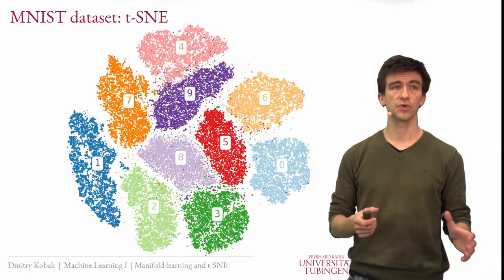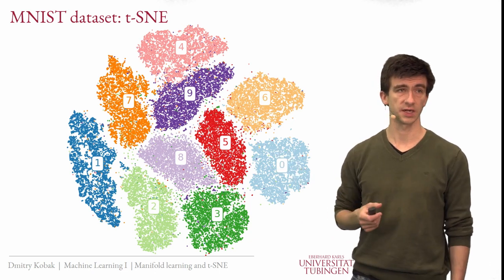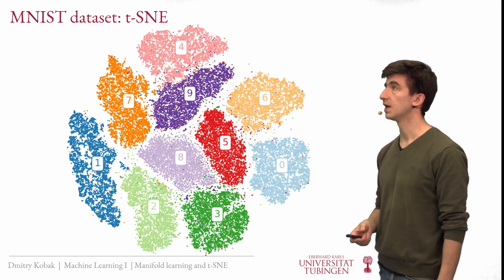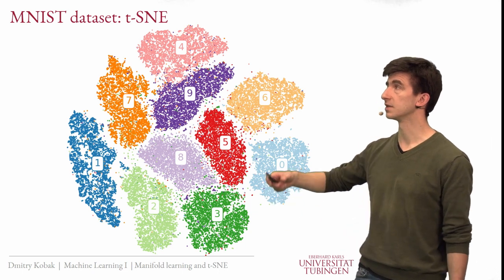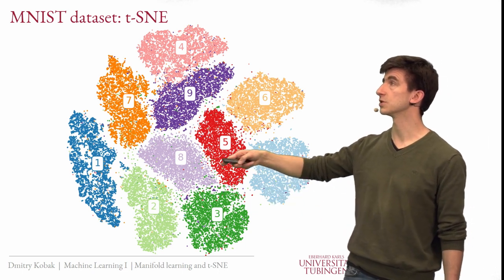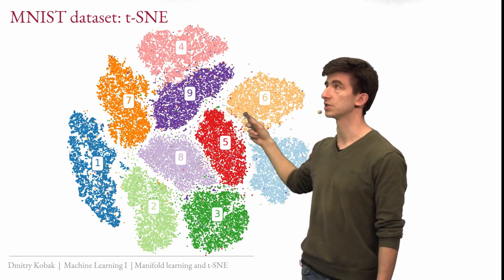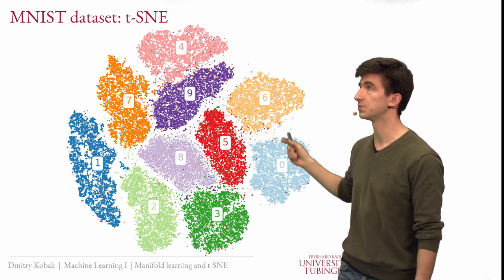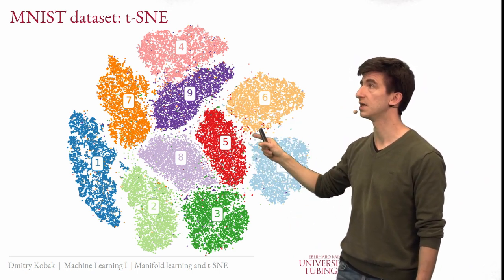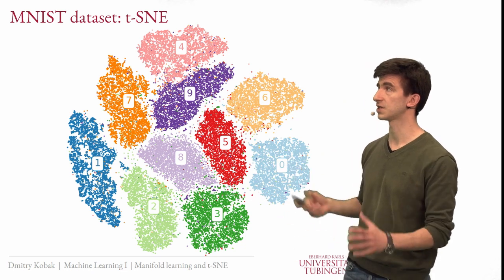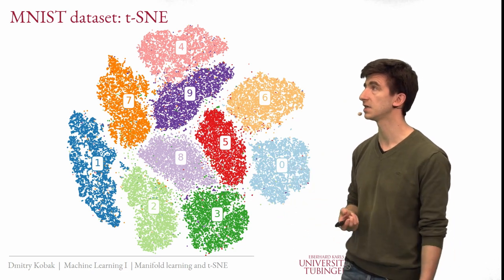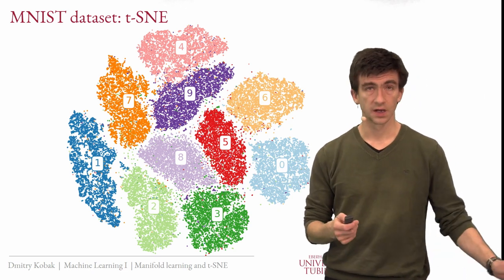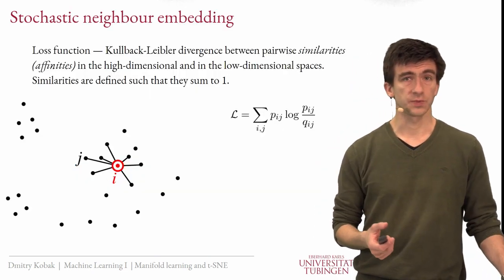Let me immediately show how T-SNE of MNIST looks. This is the default T-SNE picture of MNIST, and it is beautiful. You see that every digit is actually its own island, with almost no overlap between different digits and white space in between. So we can clearly see that there are ten clusters in the data.